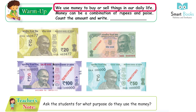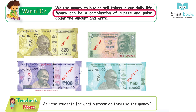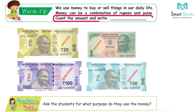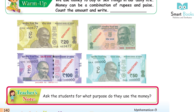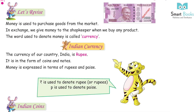Warm up: we use money to buy or sell things in our daily life. Money can be a combination of rupees and paise. Count the amount and write.